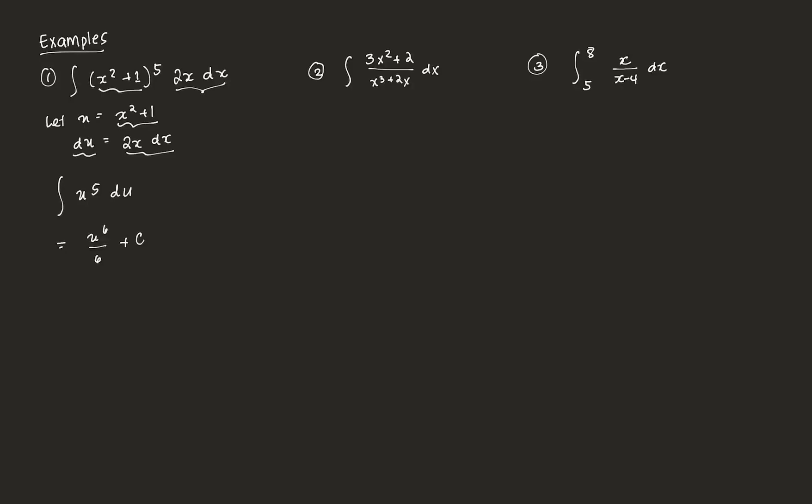If we integrate with respect to u, that's just going to be equal to u⁶ over 6 plus c. Then we can just plug in the values we know. We know that u is equal to x² + 1. So the answer to this is going to be (x² + 1)⁶ over 6 plus c. That's the answer to this one.